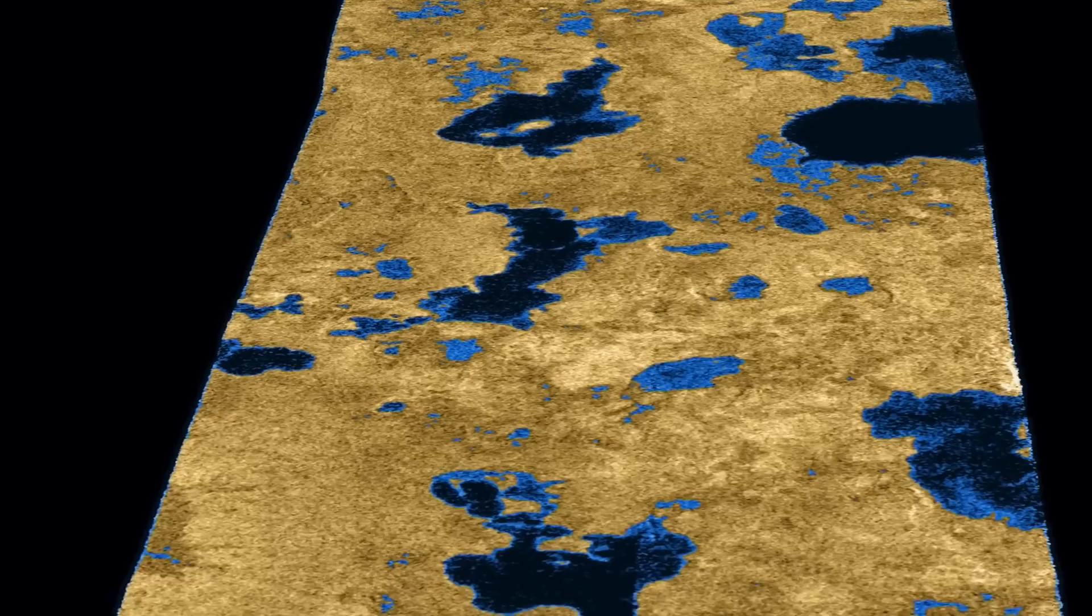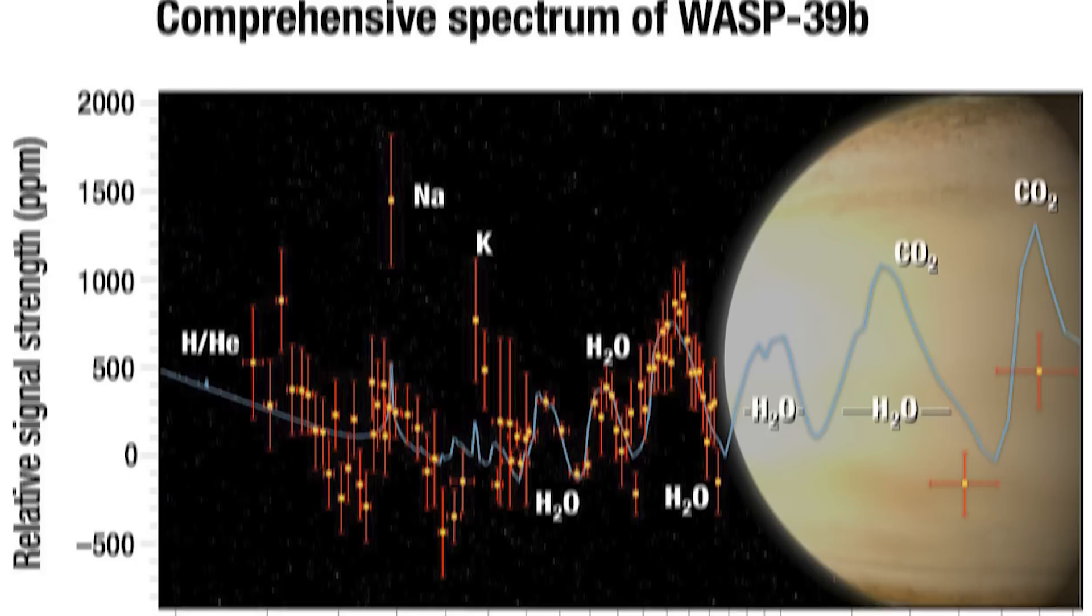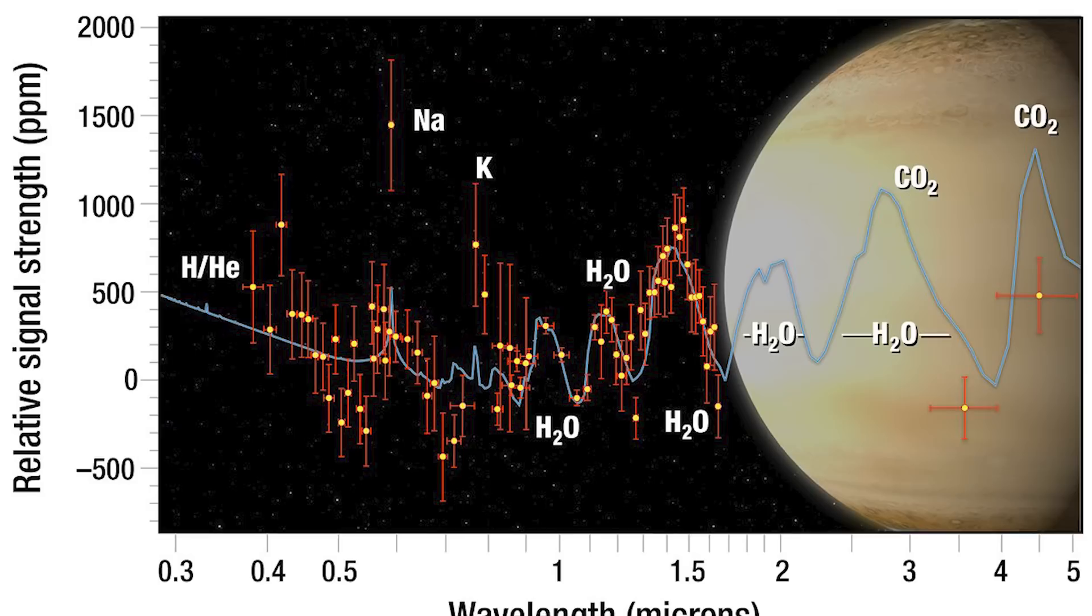The Webb Space Telescope discovered water vapor in the atmosphere of this exoplanet. WASP 39b has three times as much water as Saturn does, and combined with the water abundance, scientists have inferred the presence of a large quantity of heavier elements in the atmosphere.